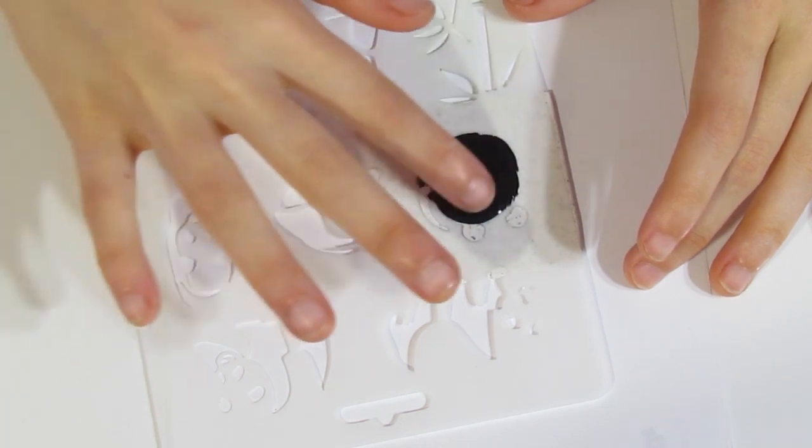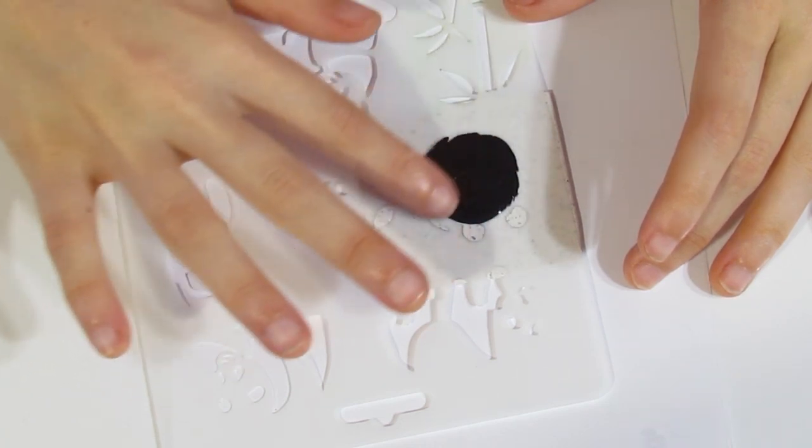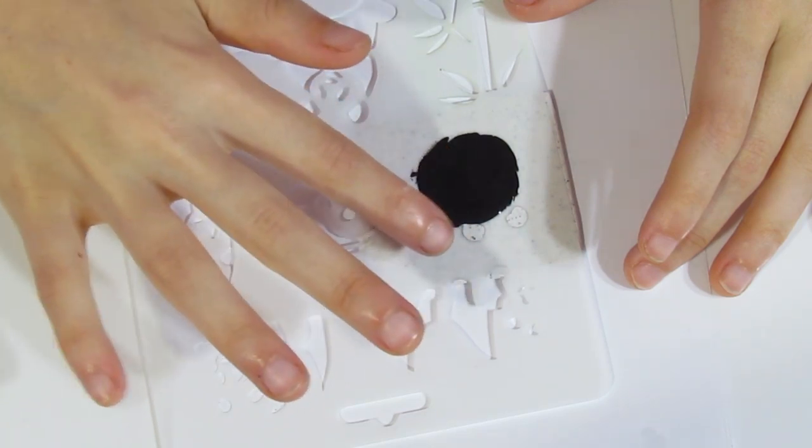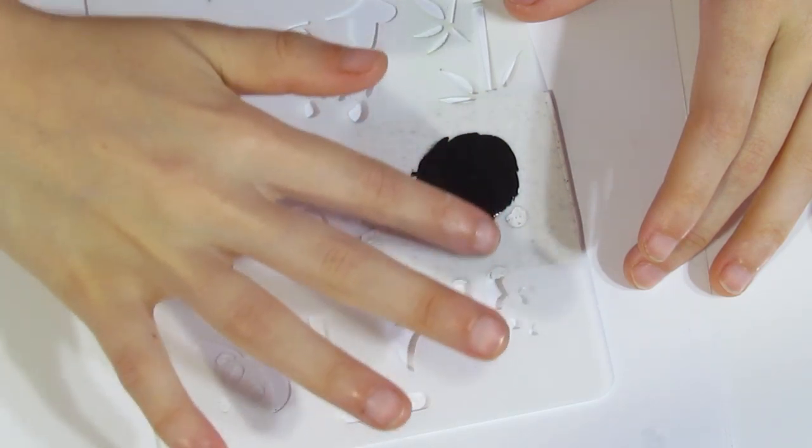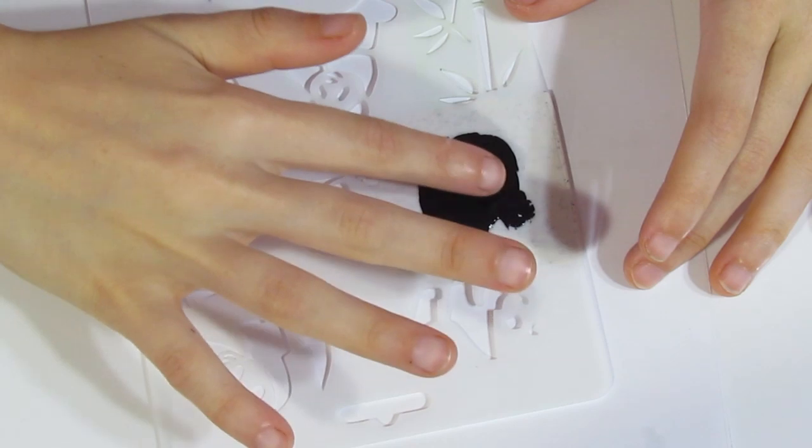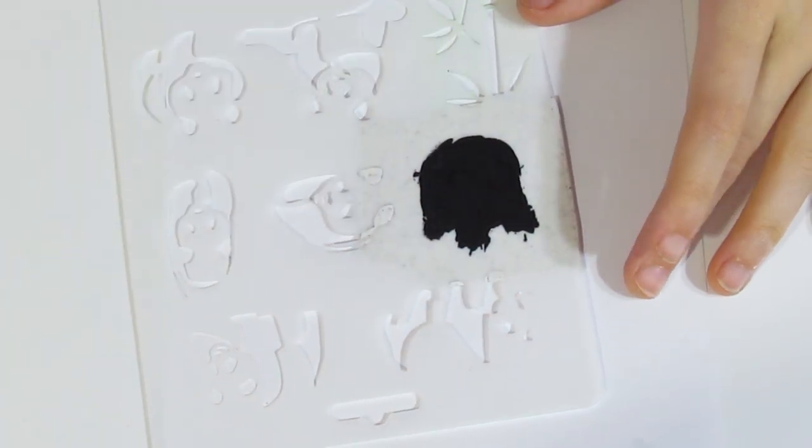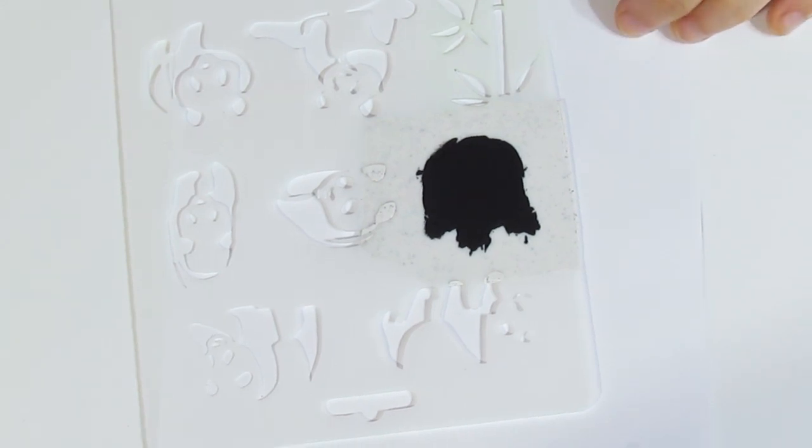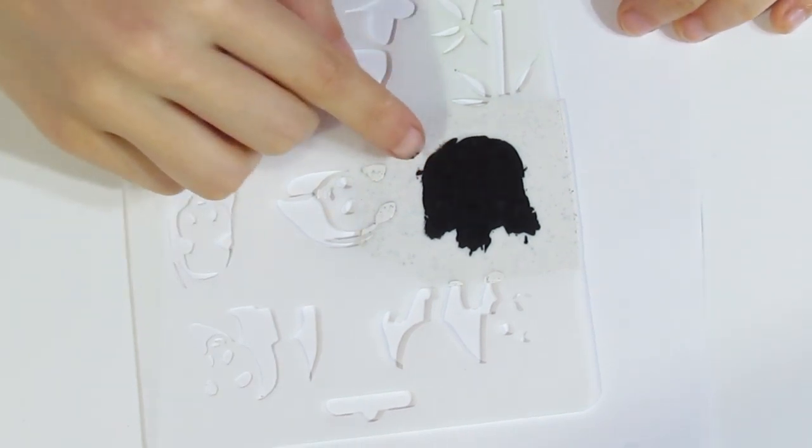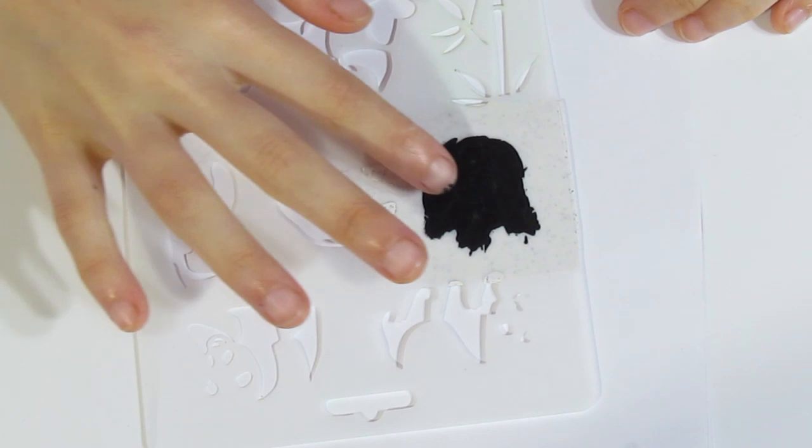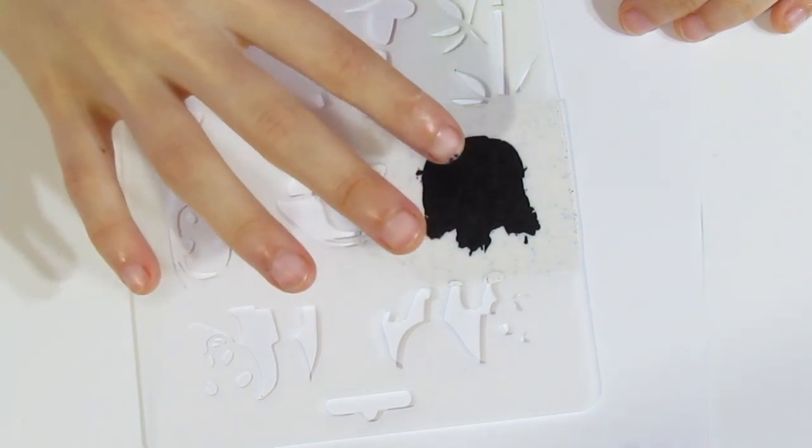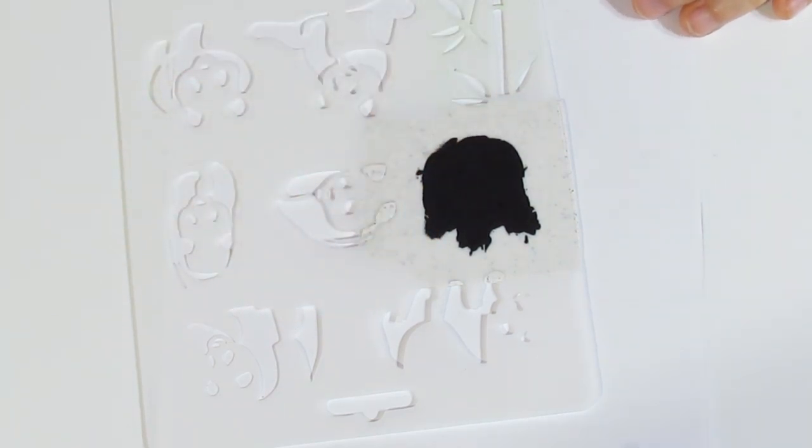Just apply a fair amount and try not to get it on this other bit of the stencil here. Apply a nice thick layer so that it is pure black. Just checking that I've got everything. Then we're just going to lift it up.